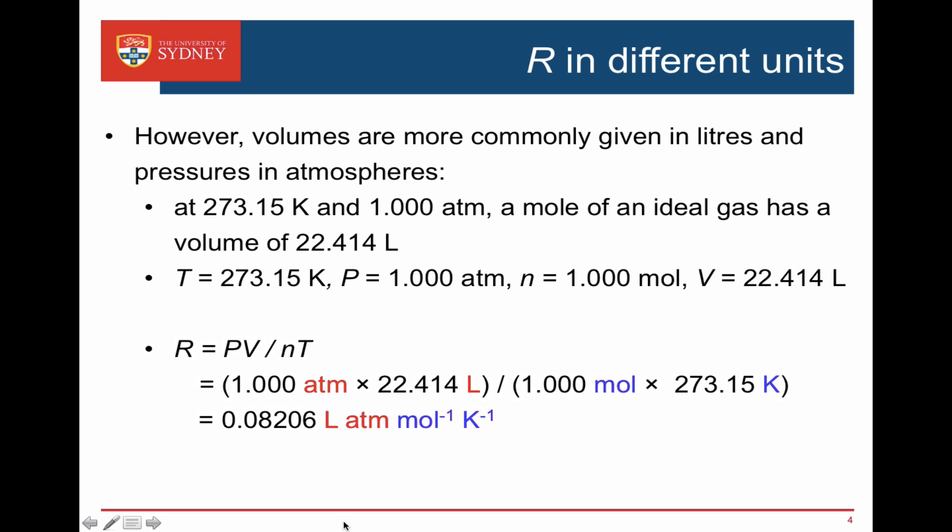Now we can use the ideal gas equation to work out the value of R. PV equals nRT so R is PV upon nT. Pressure times volume is 1 atmosphere times 22.414 liters and we're going to divide through by nT, 1 mole times 273.15 Kelvin. And we're working out that R is 0.08206 liters atmospheres moles to the minus one Kelvin.